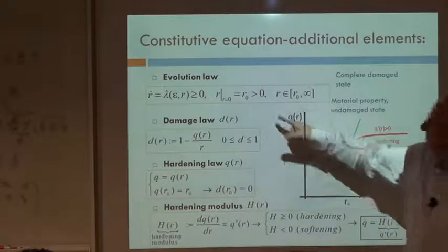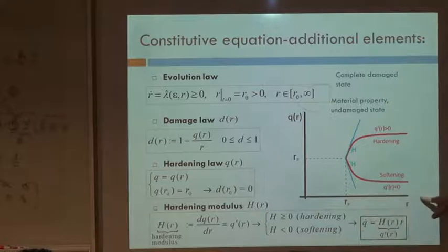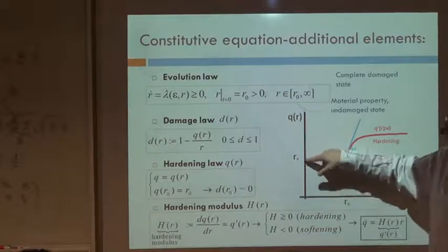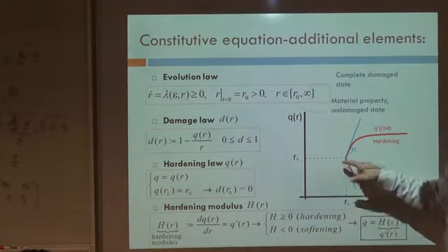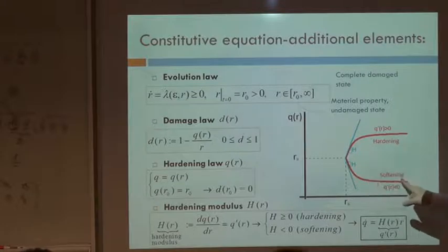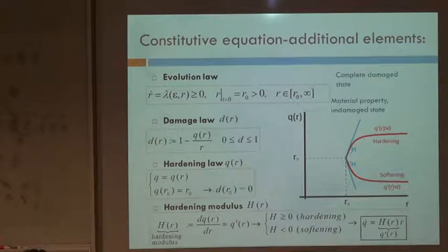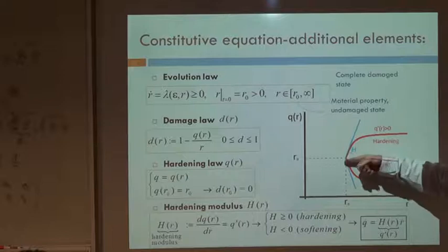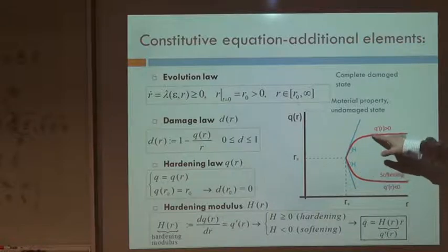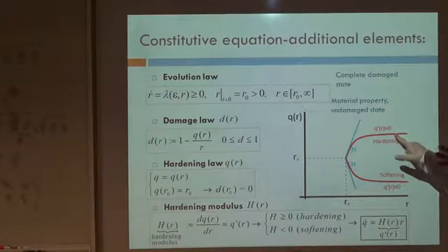R is the internal variable. We said it starts at a certain threshold R₀ and goes this way. Q is a scalar function of R, which starts at the same value R₀ and then can increase or decrease. If it increases, that denotes hardening. If the law decreases, we are modeling softening.